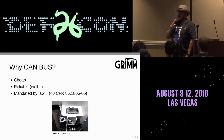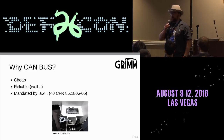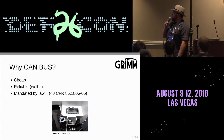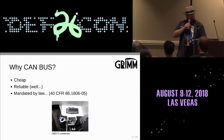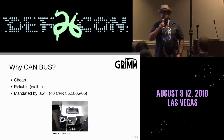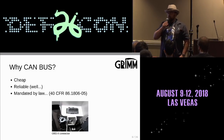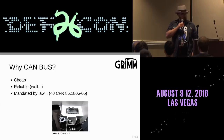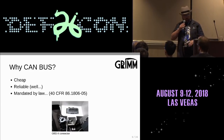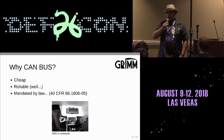CAN bus is used quite extensively outside of automobiles. It's used in some aviation areas, building automation, and industrial control applications as well. Those often use a different physical layer — there are quite a few different physical layers that CAN bus will run on. We're going to focus on ISO 11898-2, which is the spec that CAN bus uses in an automobile.